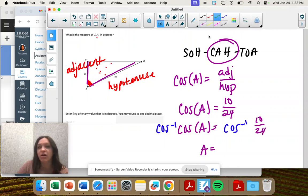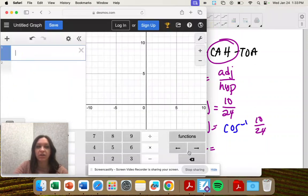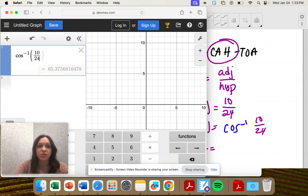These are opposites, cosine and cosine inverse, and we're just left with A. And then cosine inverse goes in the calculator. So functions inverse cosine 10 over 24.